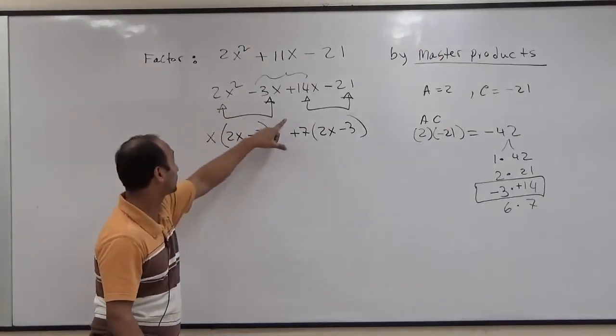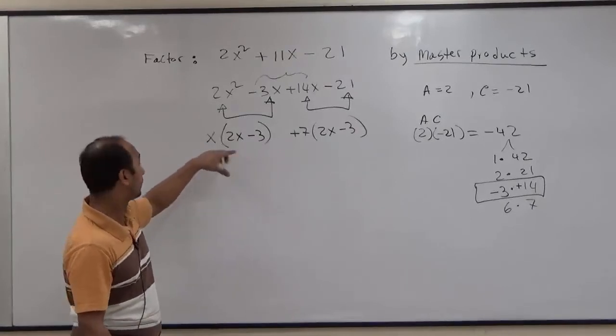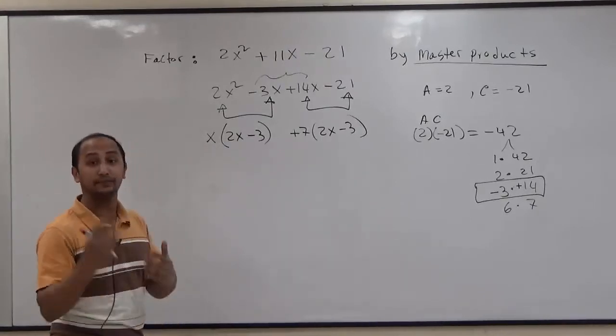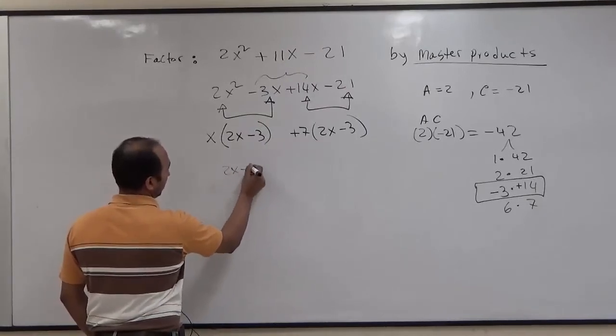From the four terms, we turned the polynomial into two terms. From the two terms, we can take a GCF again, which is common in this case, 2x minus 3.